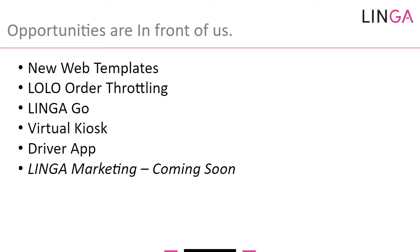We have added three new templates — I showed you in the previous webinar what we were working on, and I'm going to show you where you can find it. Those will have large, small, and no-logo designs with no pictures on the menu items. We've also added order throttling for online ordering, which is very highly requested. We also announced the Linga Go — finally certified after a year and a half of work with Clover Flex and First Data. It was unbelievable how long it took us to release this, but it's out there now.